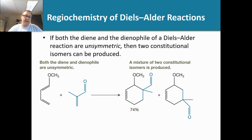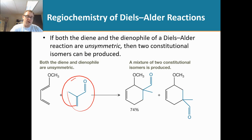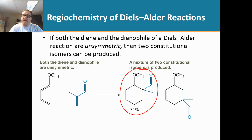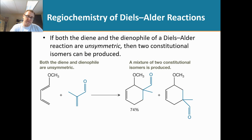Hello class. If you encounter a Diels-Alder reaction in which your diene is not symmetrical and your dienophile is also not symmetrical, then there are some regiochemical considerations that need to be made. When we do this Diels-Alder reaction, you can see that we have two different types of products here. This is the major one, and this one would be the minor one. The difference is the regiochemistry — the substituents on the dienophile.